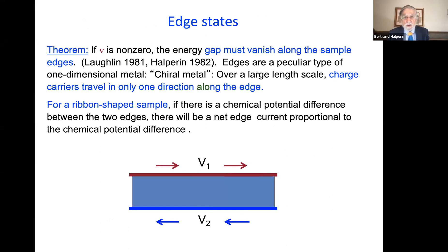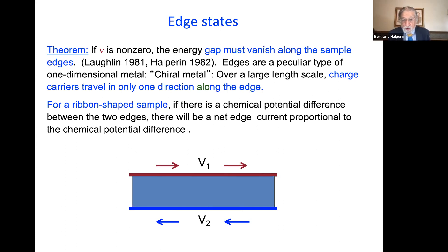An important point is that when you're in one of these quantized Hall states, fractional or integer, if nu is non-zero, the energy gap has to vanish along the sample edges. Even though there's a gap in the middle of the sample, these edges form a peculiar type of one-dimensional metal called a chiral metal, because over large length scales charge carriers travel only in one direction along the edge — of course opposite directions on the two edges. If you produce a chemical potential difference between the two edges, there's going to be a net current proportional to that chemical potential difference.